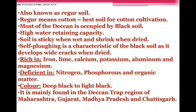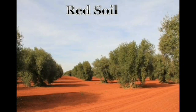Black soil, also known as regur soil — regur means cotton — is the best soil for cotton cultivation. Most of the Deccan plateau is occupied by black soil. It has high water-retaining capacity. The soil is sticky when wet and shrinks when dry. Self-plowing is a characteristic of black soil as it develops wide cracks when dry. It is rich in iron, lime, calcium, potassium, aluminium, and magnesium, but deficient in nitrogen, phosphorus, and organic matter.